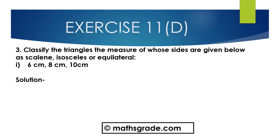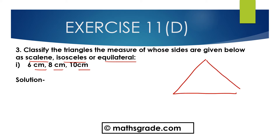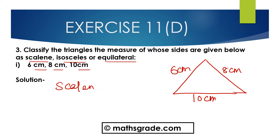Question 3 - Classify the triangles whose measures of sides are given below as Scalene, Isosceles, or Equilateral. First part: 6cm, 8cm, 10cm. The measures of the sides are 6cm, 8cm, and 10cm. In this triangle, all three sides are different — 6cm, 8cm, and 10cm are not equal. We know any triangle whose all three sides are different is called a Scalene triangle. So this triangle is a Scalene triangle.